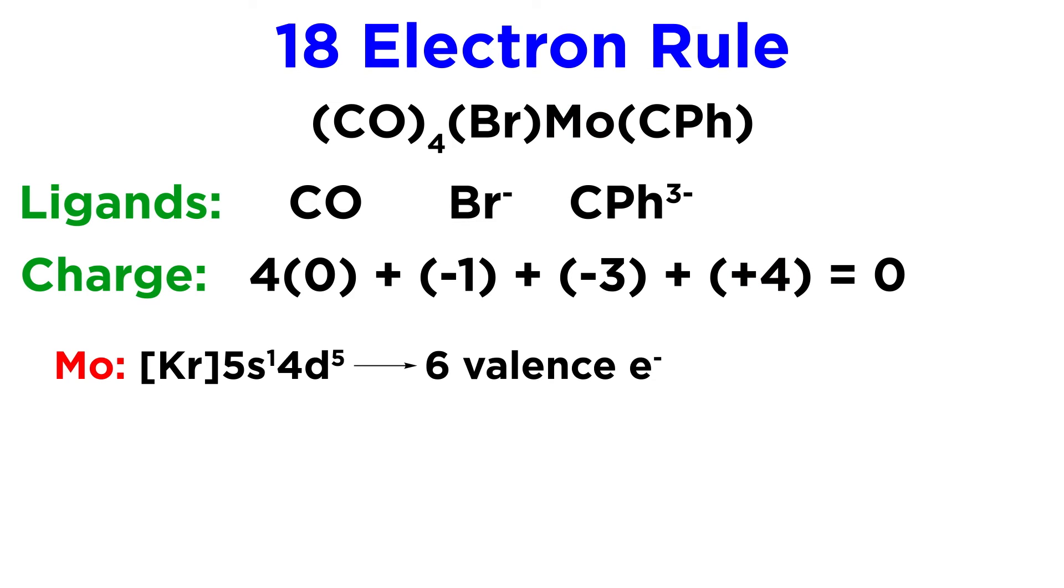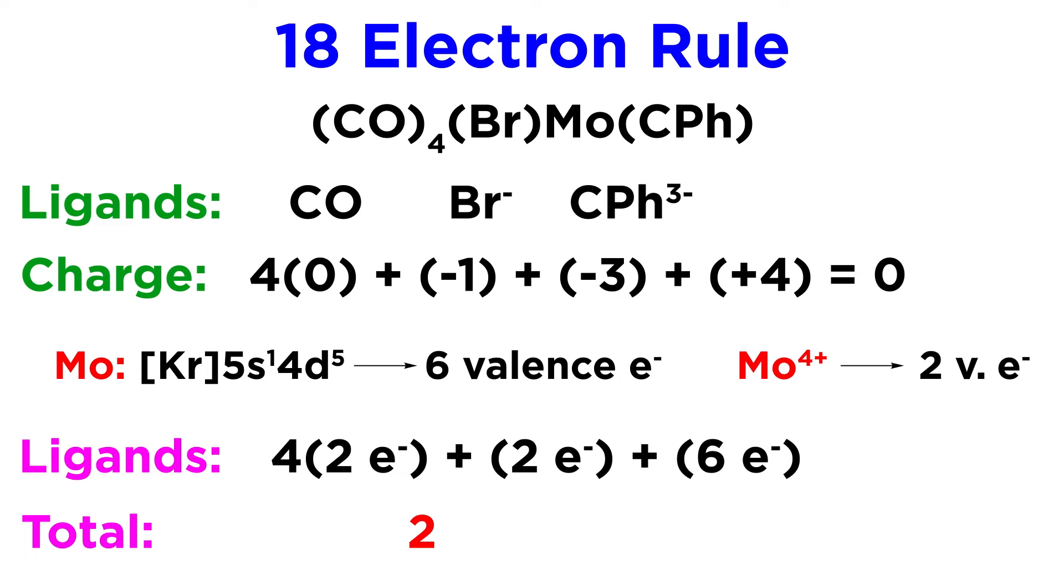Again, molybdenum has six valence electrons, so in the plus four oxidation state, it must have only two. So let's take those two from the metal, plus a total of eight from the four carbonyls, plus two from the bromide, plus six from the alkylodyne, and that gets us up to eighteen, so this is likely to be a stable complex.